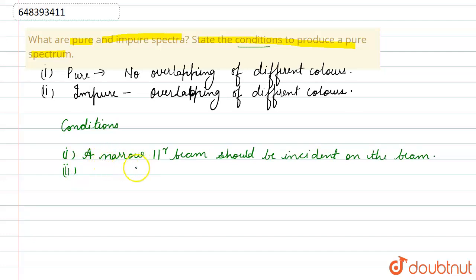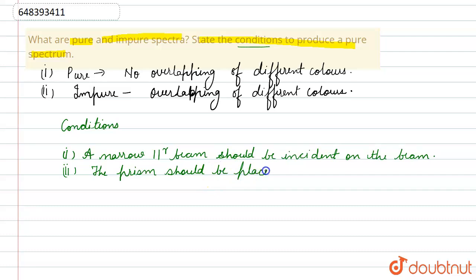The second condition is that the prism should be placed in the minimum deviation condition. So the prism should be placed in the position of minimum deviation.